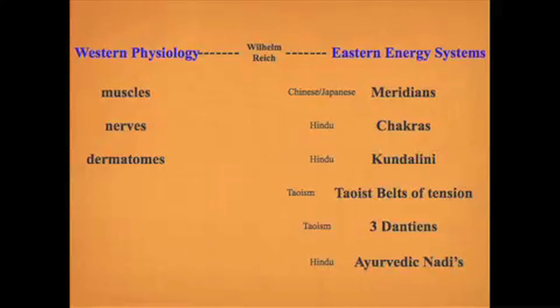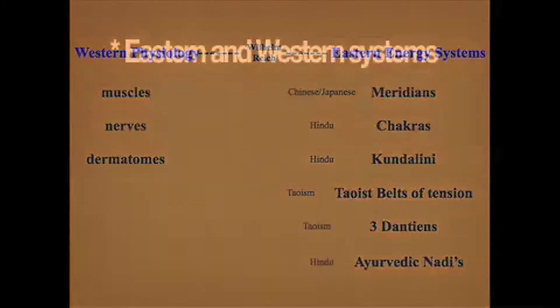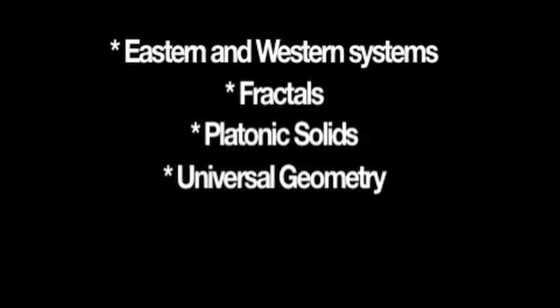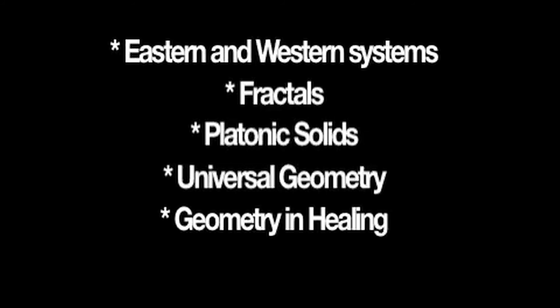As we incorporate this marriage of East and West, this program will introduce you to Western and Eastern concepts and healing and illustrate how they can fit together like a jigsaw puzzle. From the West we have basic systems such as muscles, nerves, and dermatomes, and from the East we have a host of ancient energy systems such as meridians, chakras, dantians, kundalini, and the insights of traditional Chinese medicine. We will be learning what these systems are, what fractal means, what the Platonic solids are, how geometry is found in the universe, and how it relates to health and healing.